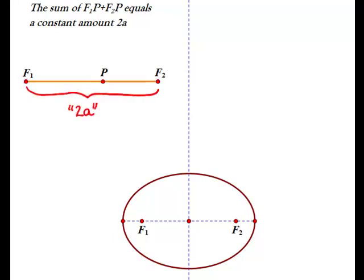This means that the sum of f1 to p plus f2 to p equals twice that amount. If you notice here in orange, that's equivalent to the whole length of the major axis.